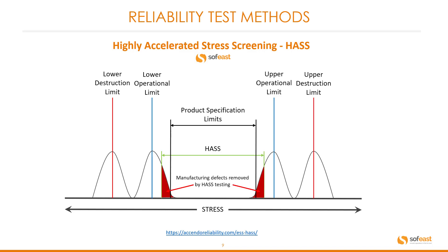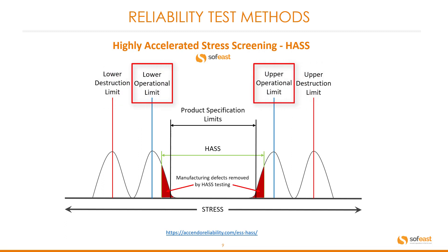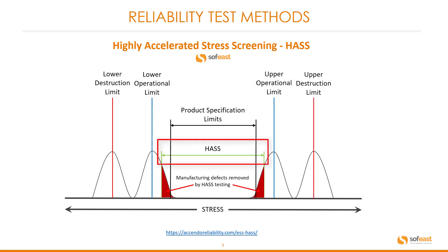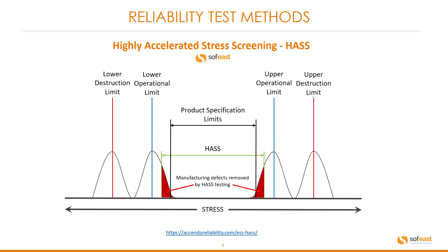Let's have a look at a quick graph for HASS. On the extreme ends of the graph, we have the lower and upper destruction limits. The next set of limits in are the lower and upper operational limits. In the center, we have the HASS section and the production specification limits. We can see that the manufacturing defects removed by the HASS testing are highlighted in red — this is the objective of the HASS testing, to remove these poor products.